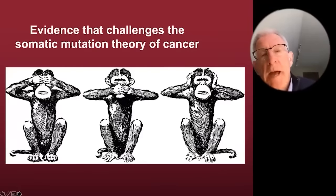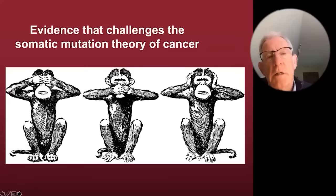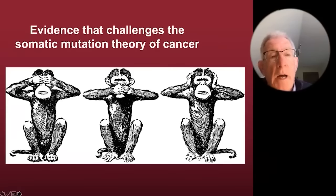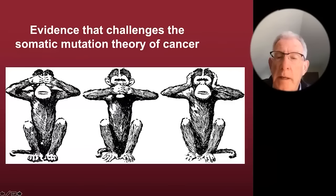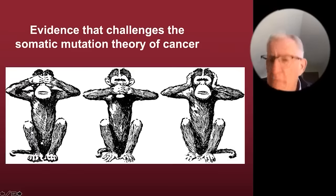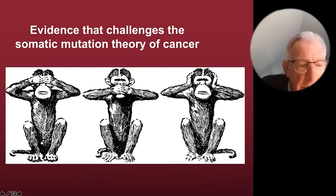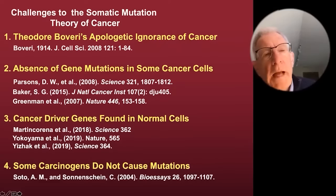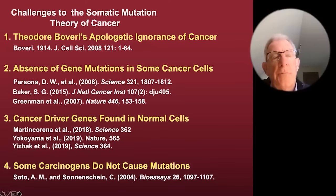We're going to challenge the somatic mutation theory with significant information that the field seems unwilling to engage with. When you come up with a new idea challenging a dogmatic view, most people in the field don't want to look at the information, don't want to talk about it, don't want to hear about it. Theodore Boveri in 1914 published a paper suggesting the possibility that dysregulated growth of cancer cells could be due to abnormalities in chromosomes.